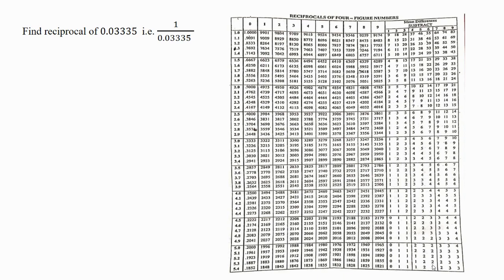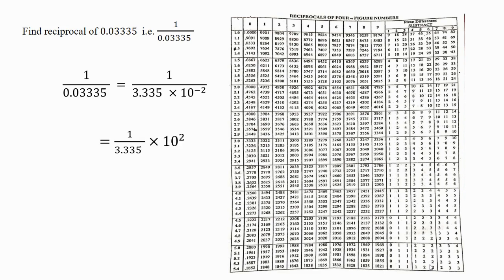Now let's find the reciprocal of 0.03335, which I express as 1 divided by 0.03335. First, we have to convert the given number into standard form. So I write it as 3.335 into 10 raised to minus 2. When I multiply 3.335 by 10 raised to minus 2 it gives me the original number 0.03335. Now I transfer 10 raised to minus 2 to the numerator, which becomes 10 raised to plus 2.